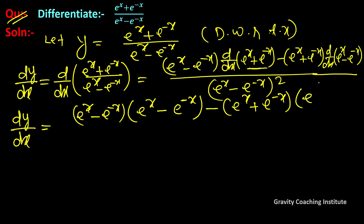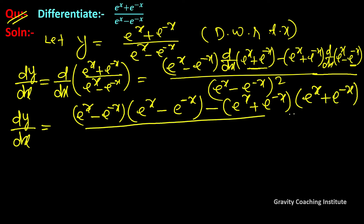और दूसरे part में (eˣ + e⁻ˣ) × differentiation of (eˣ − e⁻ˣ)। eˣ का differentiation eˣ होगा, और −e⁻ˣ में chain rule से minus x का differentiation −1 होगा, तो minus × minus = plus, giving +e⁻ˣ। So differentiation of (eˣ − e⁻ˣ) = (eˣ + e⁻ˣ), upon (eˣ − e⁻ˣ)² ।